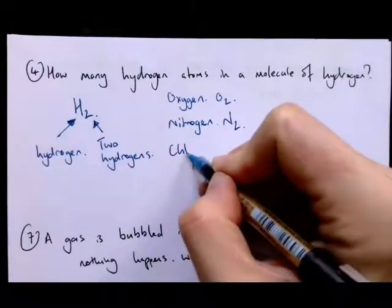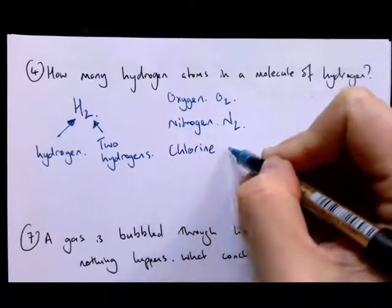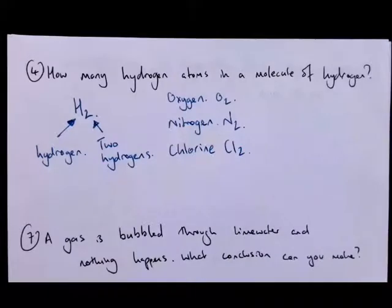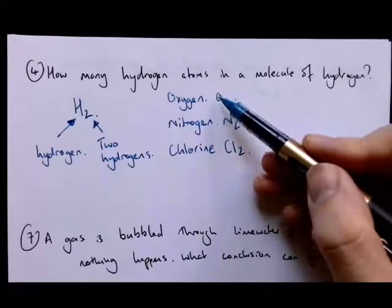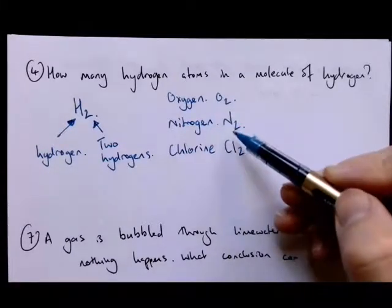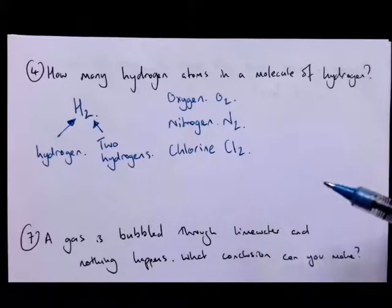And if we're talking about something like chlorine, it'll usually be Cl2. So all of these have two atoms: two atoms of oxygen, two atoms of nitrogen, two atoms of chlorine.